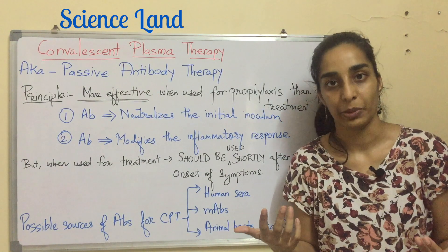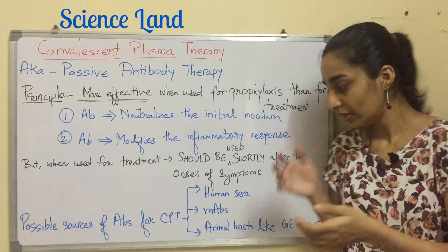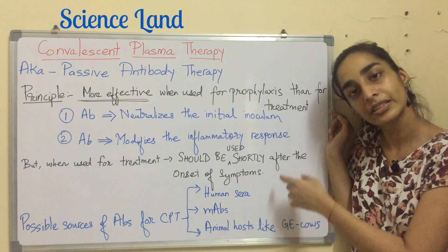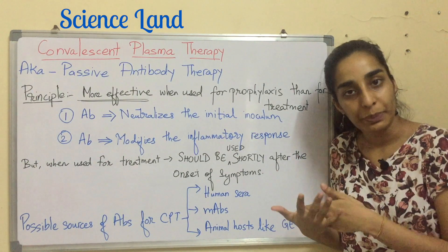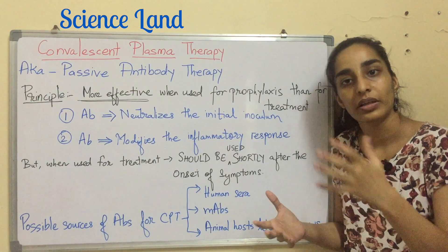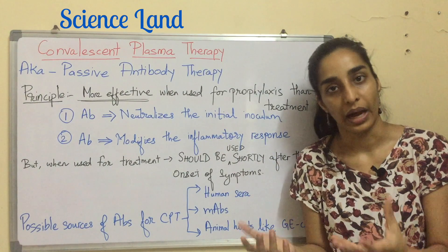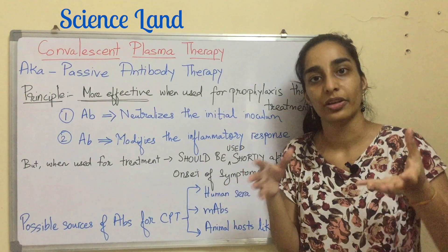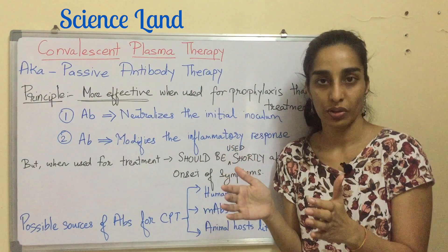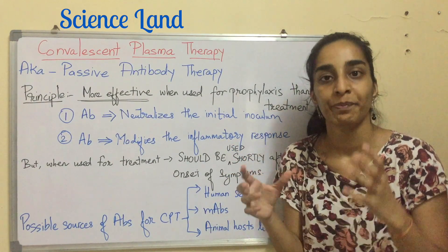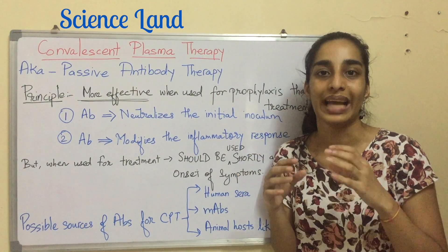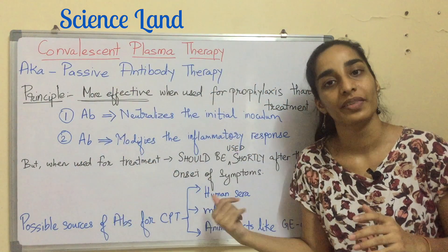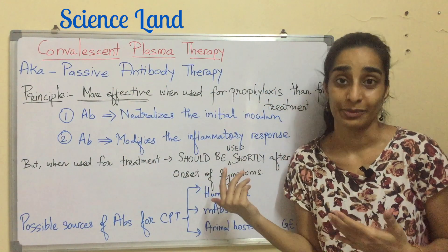For COVID-19, the monoclonal antibody and animal host sources are still under development, so the only remaining source is human serum. Patients who have already recovered donate their blood, which is then segregated, and a sufficient amount of antibodies is injected into patients. Depending on the amount and composition of antibodies, the protection for a particular disease can last from a few months to a year.